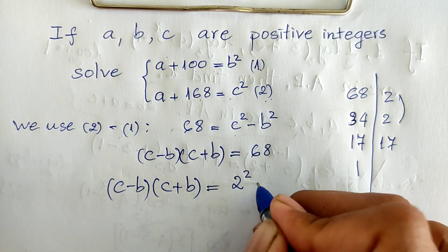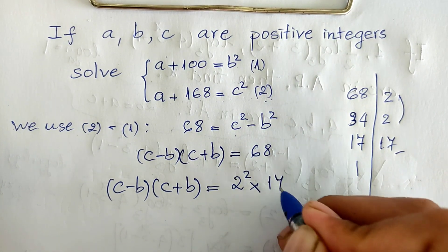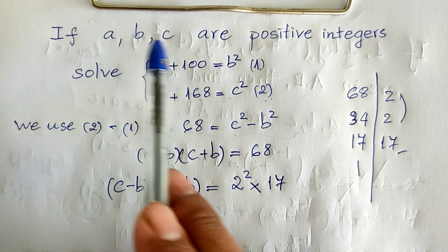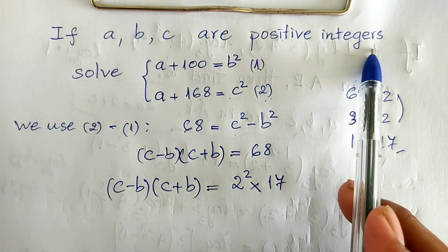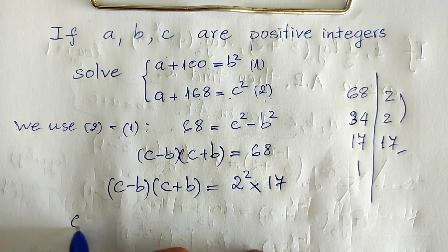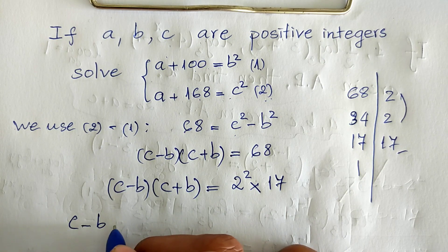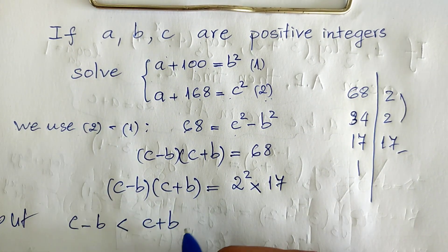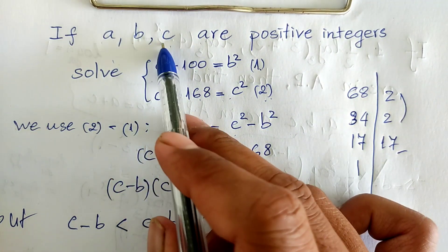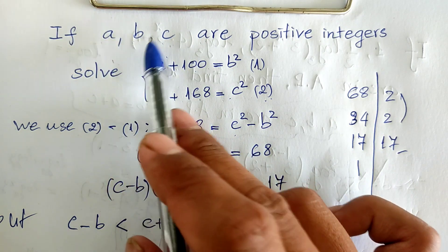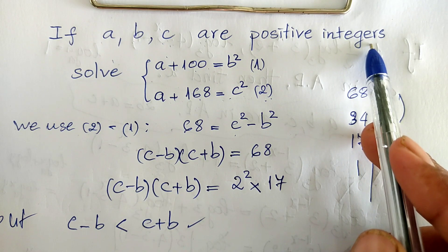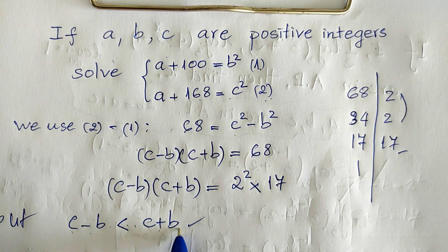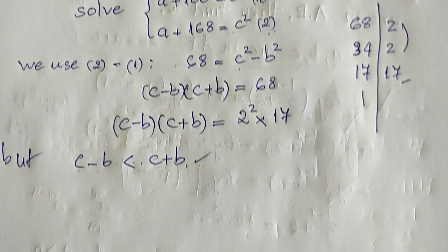So c minus b multiplied by c plus b equals 2 squared times 17, which is 68. Since a, b, c are positive integers, c minus b is smaller than c plus b.